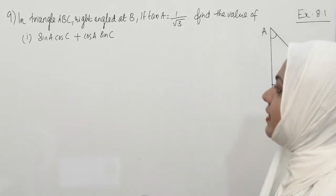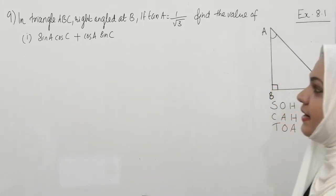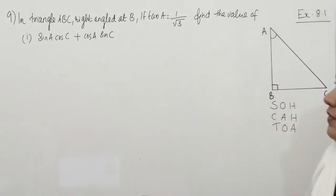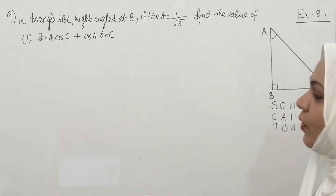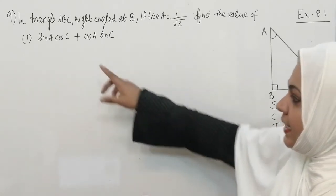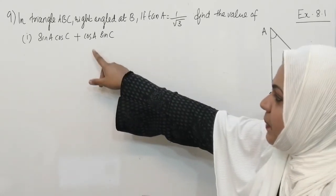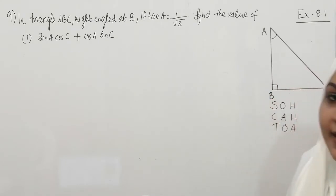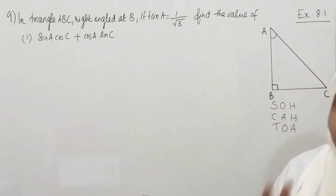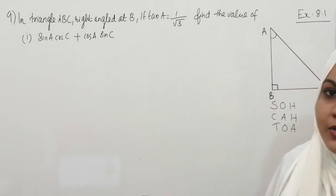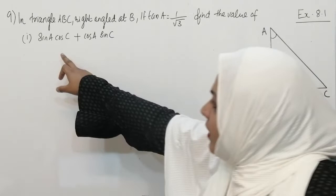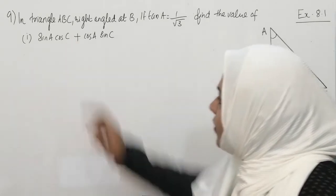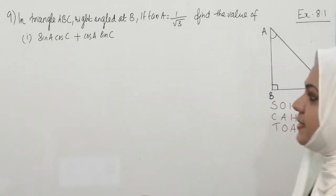The question is: In triangle ABC, right angle at B, if tan A is equal to 1 by root 3, find the value of sin A cos C plus cos A sin C. In this question there are two sub-questions. First we can solve question number one, that is sin A cos C plus cos A sin C.